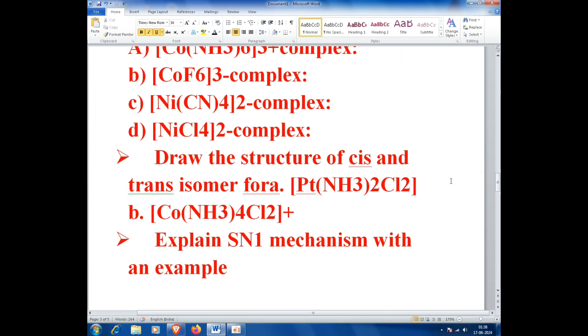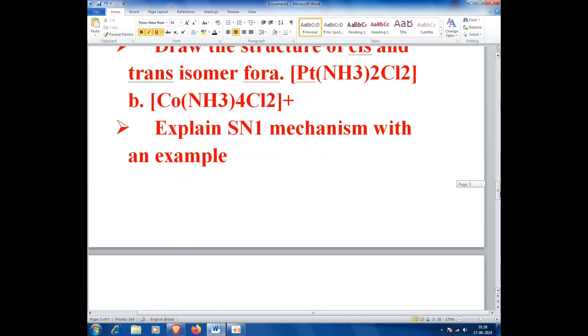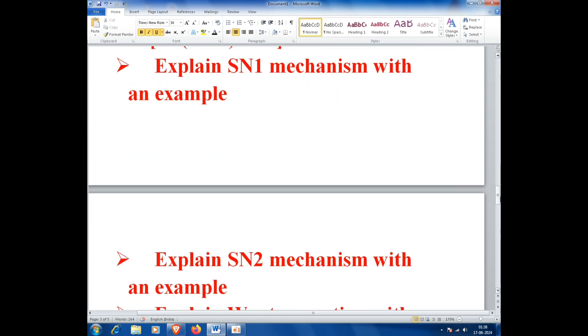Draw the structure of cis and trans isomers for [Pt(NH3)2Cl2] and [Co(NH3)4Cl2]+.